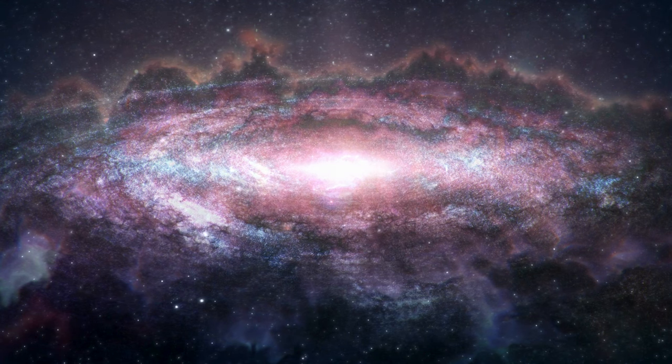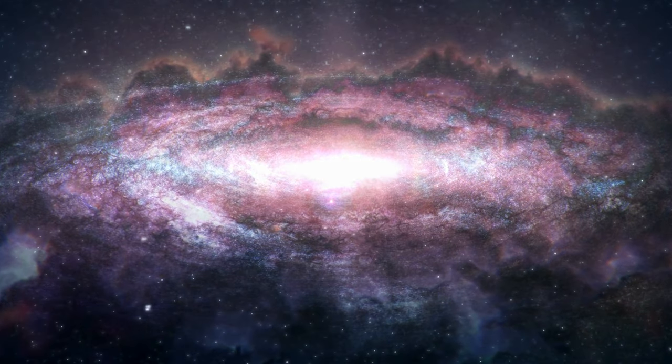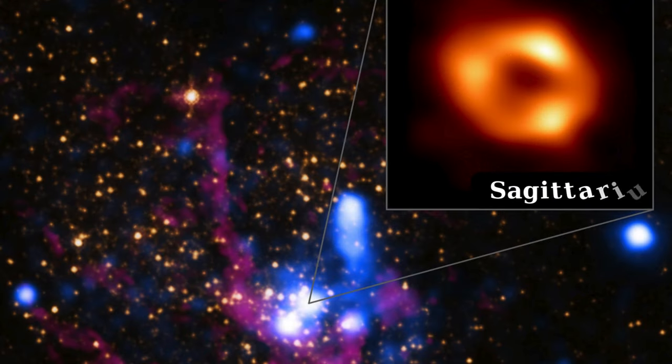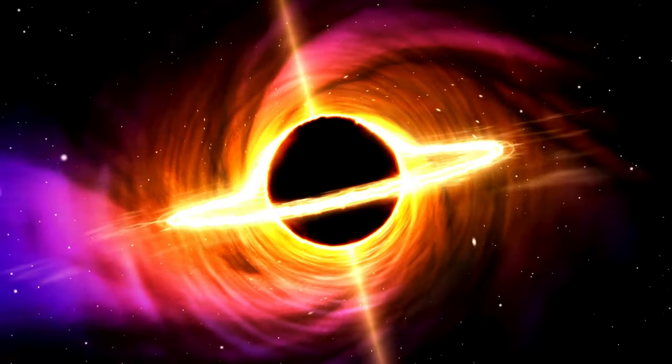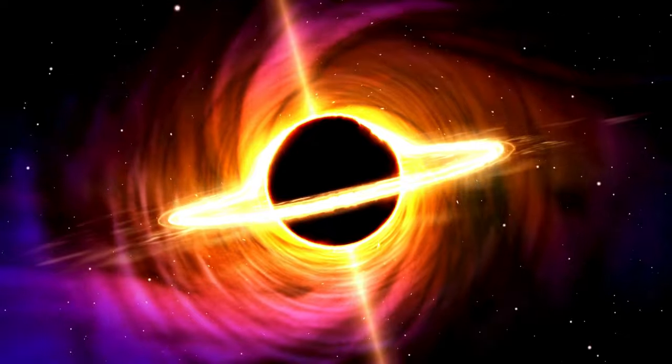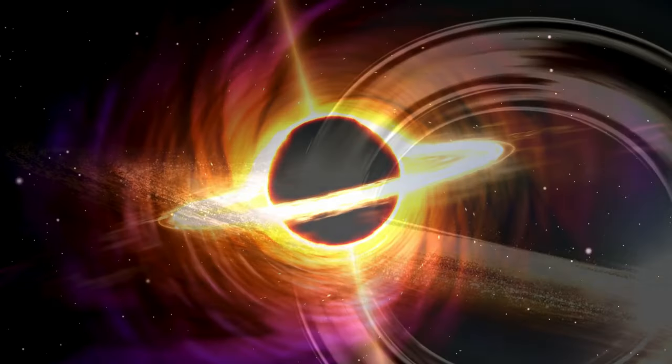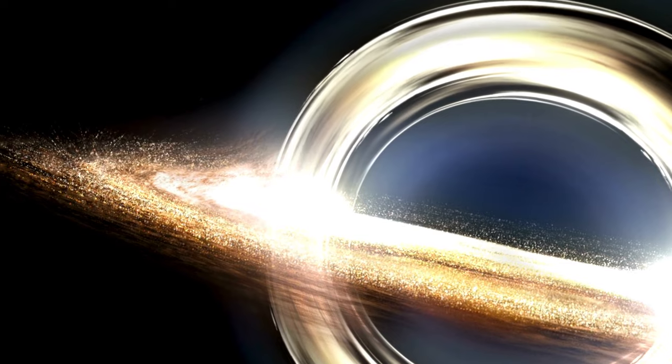The center of our galaxy is a bustling hub of activity. At its core lies a supermassive black hole, known as Sagittarius A*. This colossal object's gravity dominates the center of the Milky Way, influencing the orbits of stars and gas clouds around it.